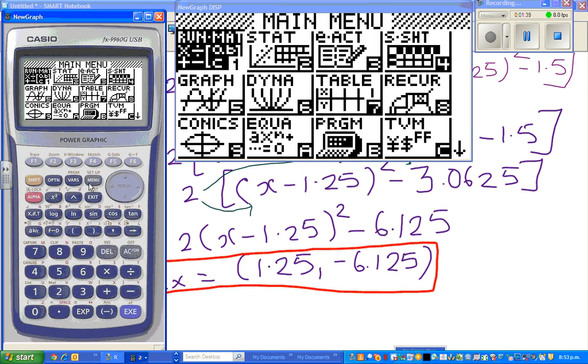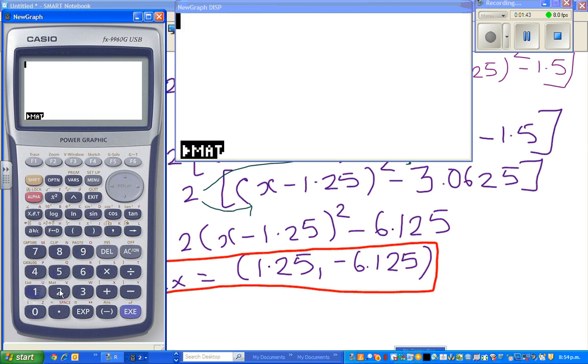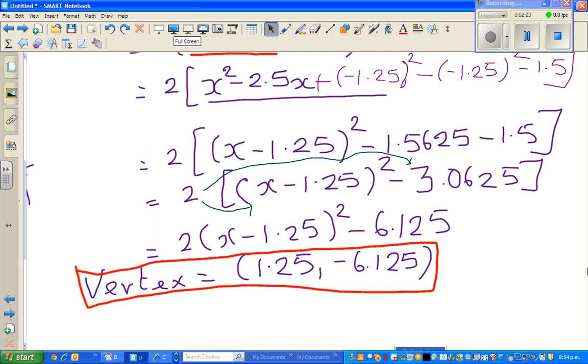So, menu, run, and 2 times minus 3.0625, sorry, I didn't put a 0 there. I'll put a 0 there. So 0, that is minus 6.125.